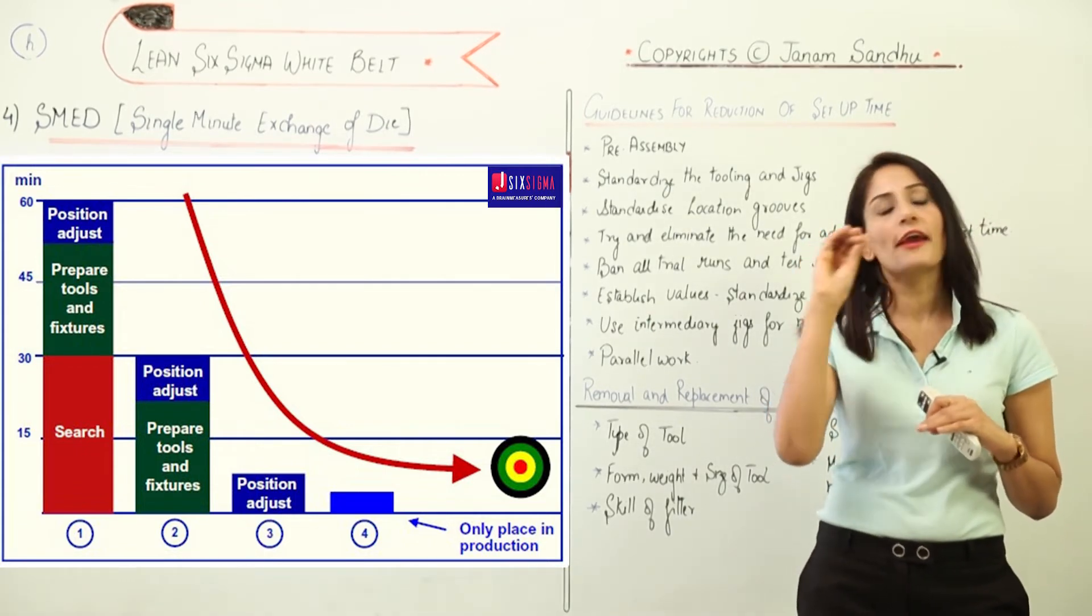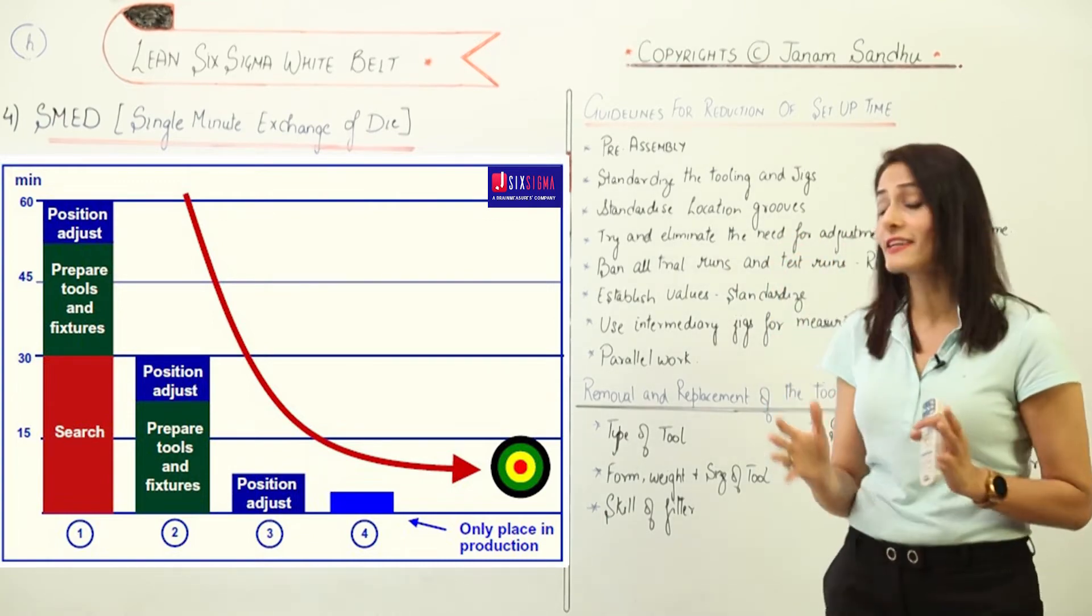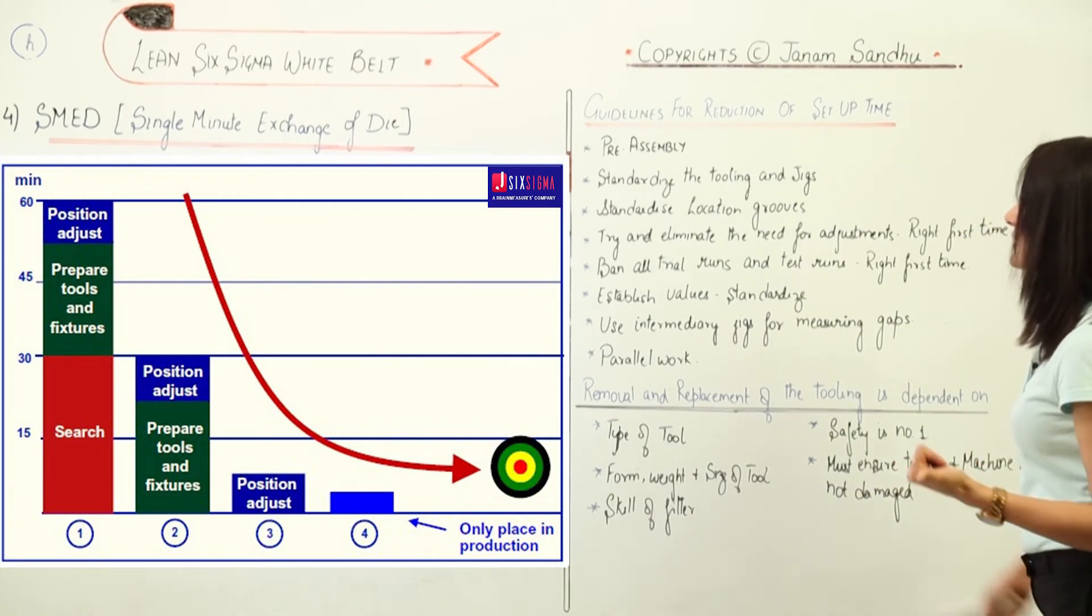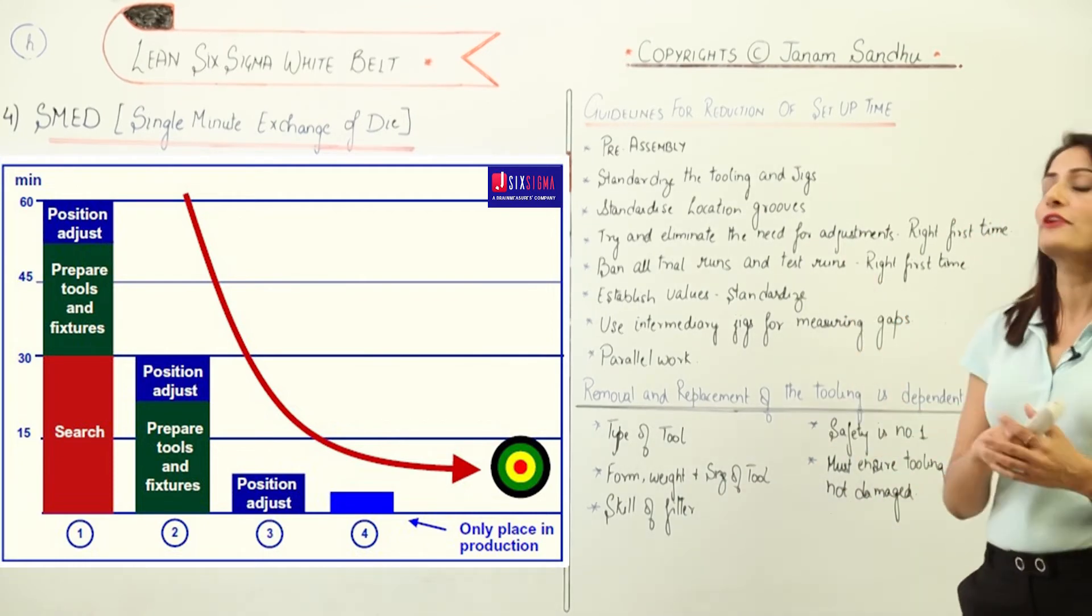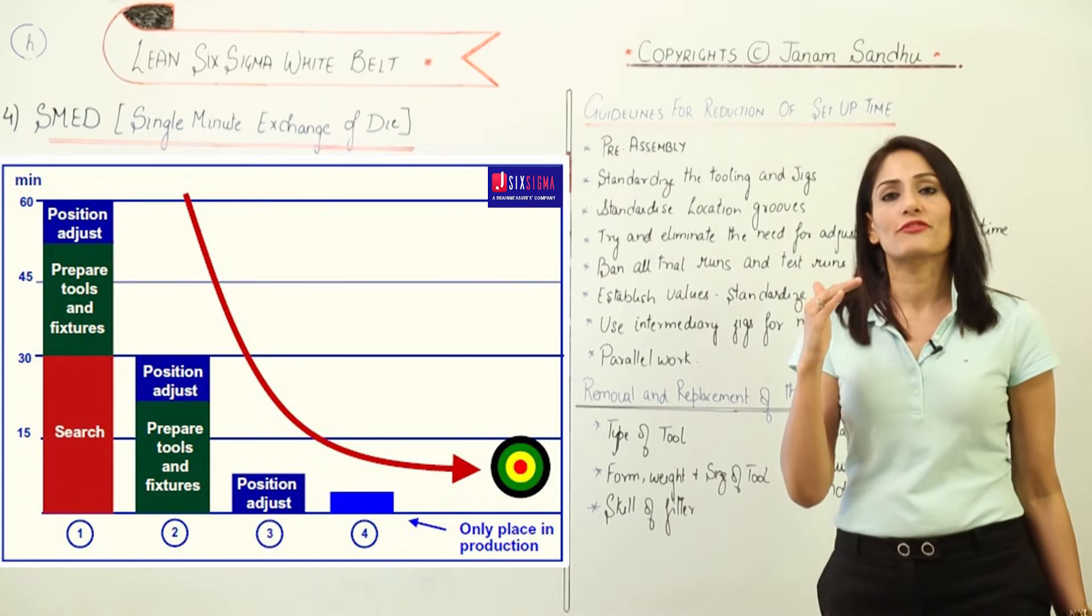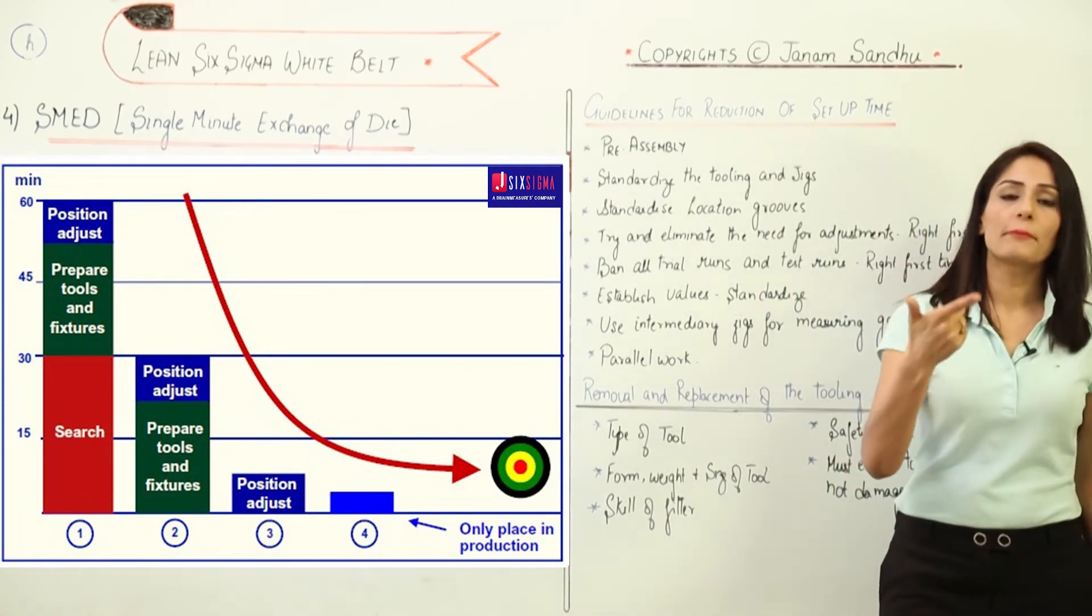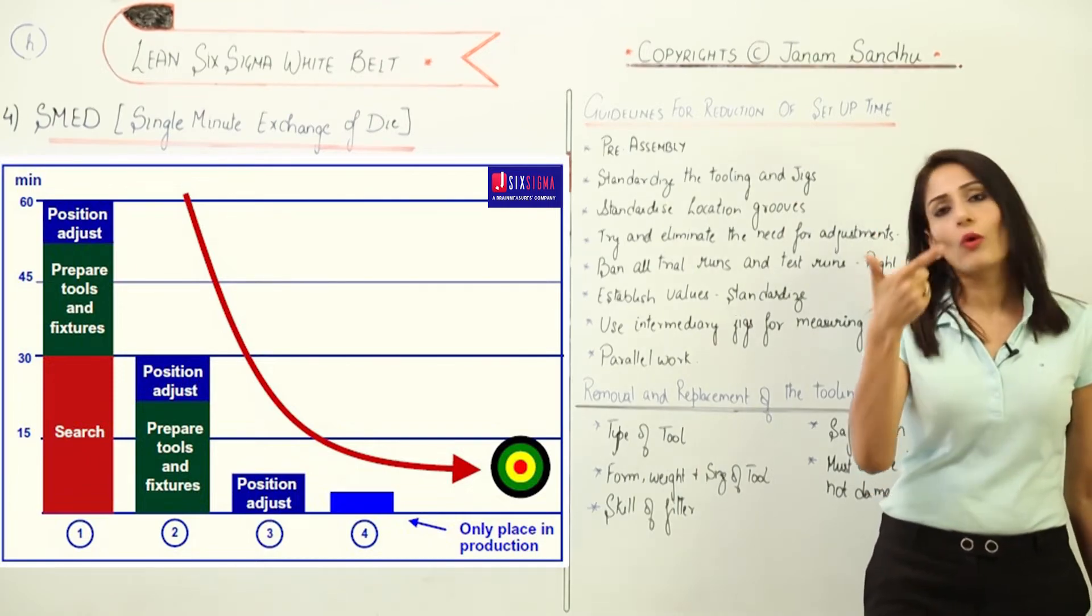You just need to know, okay, this is the adjustment of the machine and here we have to be producing the right quantity and quality of things. Ban all trial runs and test runs so that you don't need trial or test runs. As I already told you, they take a lot of time - number one. Second, they produce defective products, and both things are problematic.